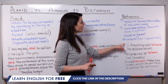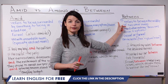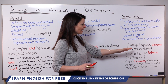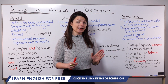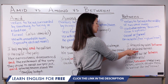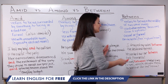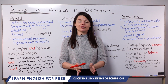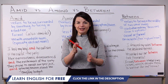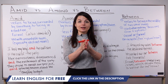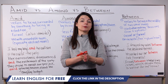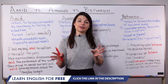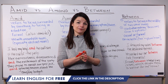First example: I dropped my wallet between the desk and the wall. Here there are two things — two nouns — the desk and the wall. That means the wallet is in the middle of those two objects. If my desk is here and the wall is here, my wallet is in the middle of those two — between A and B. That shows us something is in the middle of something else.